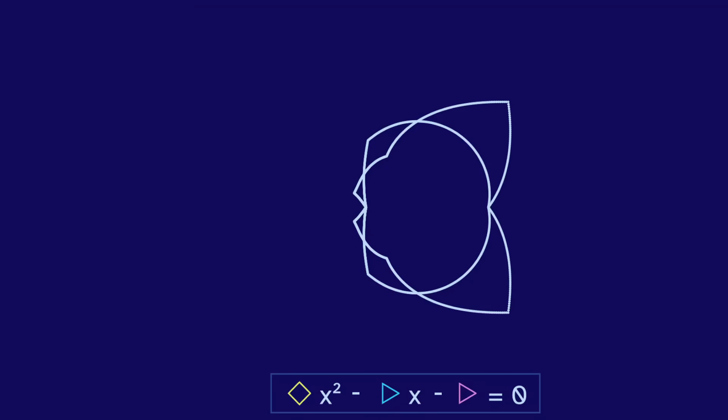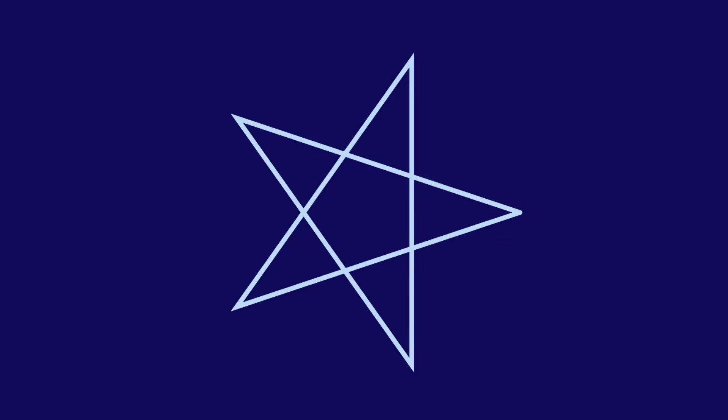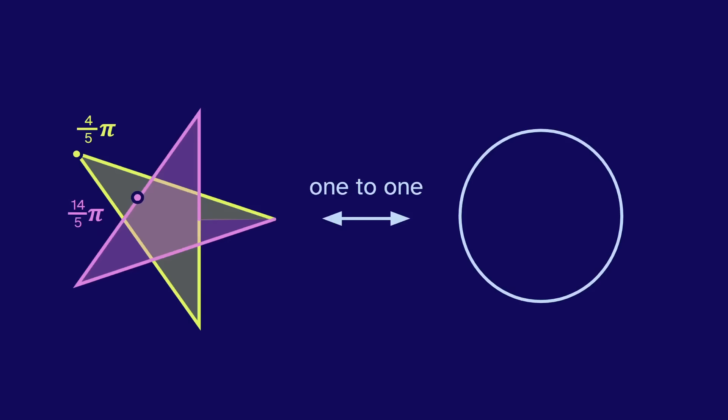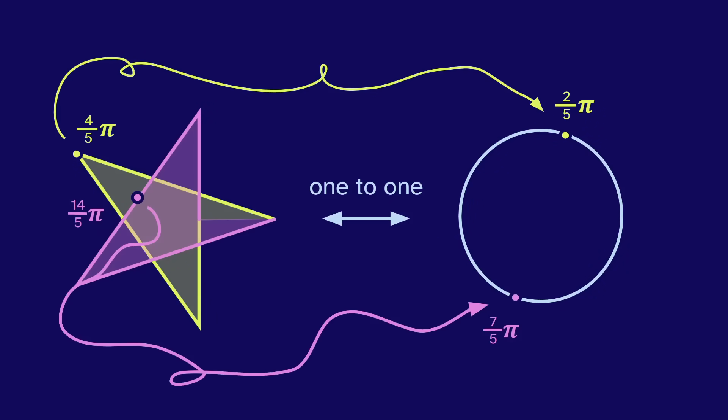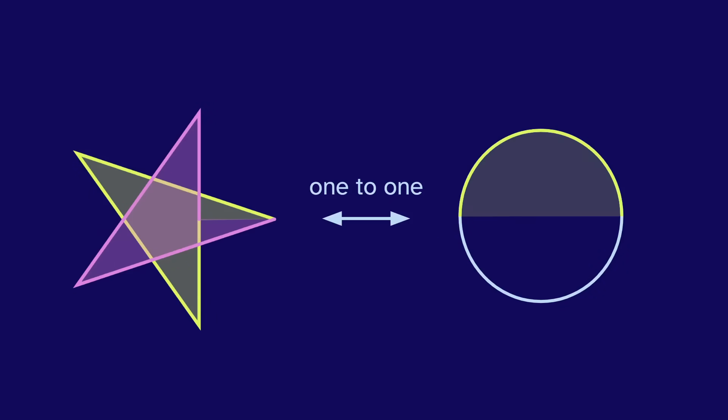Okay. What about a star? Well, at any given angle, there are two points. Which one do we pick? To draw the star, we have to make two laps around the origin. So we can say that this point is 4 fifths pi radians, since it's on the first lap, and this is 14 fifths pi radians, since it's on the second lap. Now, each point has a unique angle, so we know which to pick. To match one to one with the circle, we just take half of the angle. So the first lap matches with the first half of the circle, and the second with the second.